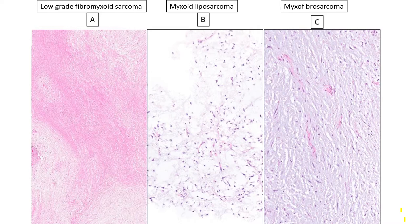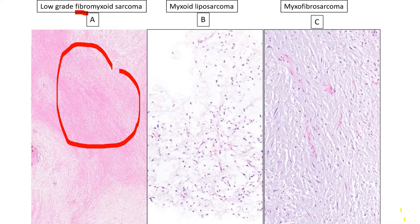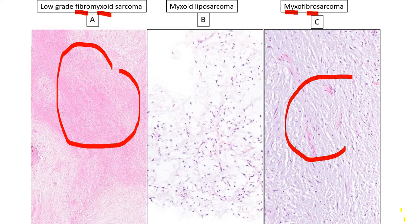This is how I've learned to do this: a low-grade fibromyxoid sarcoma is primarily fibrous, and hence the term 'fibro' comes ahead of 'myxoid,' while a myxofibrosarcoma is predominantly myxoid, and hence 'myxo' comes before 'fibro.' That's how I keep these terms straight, and it's taken me several years.